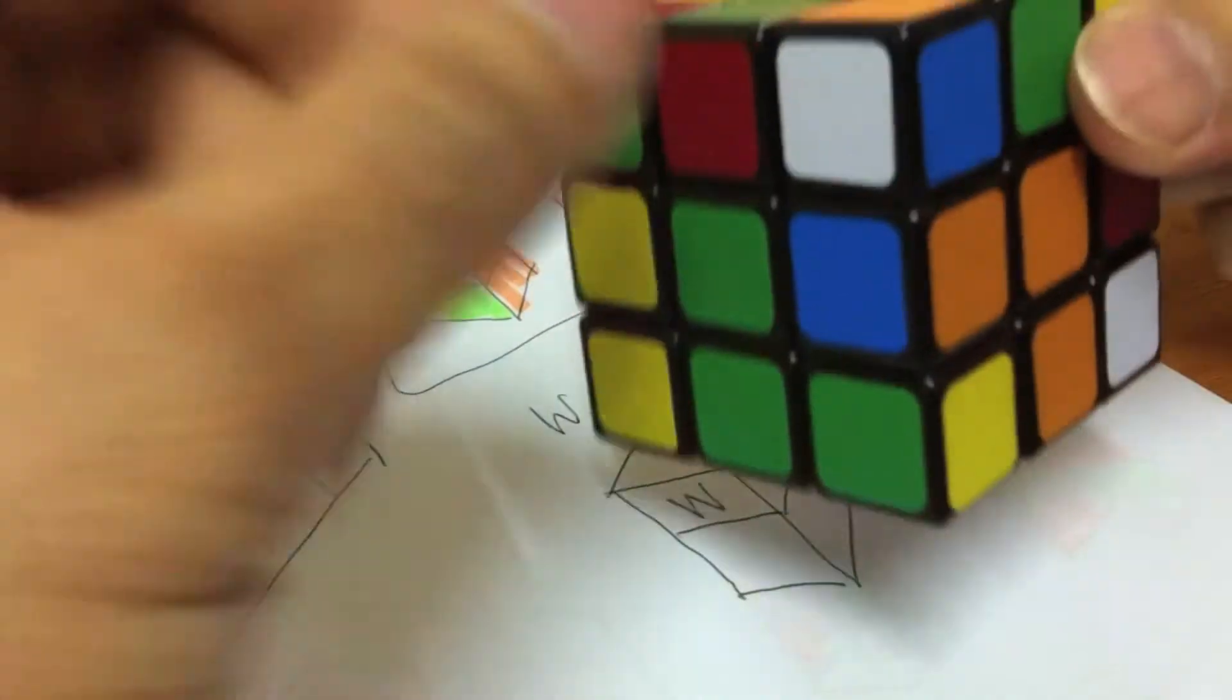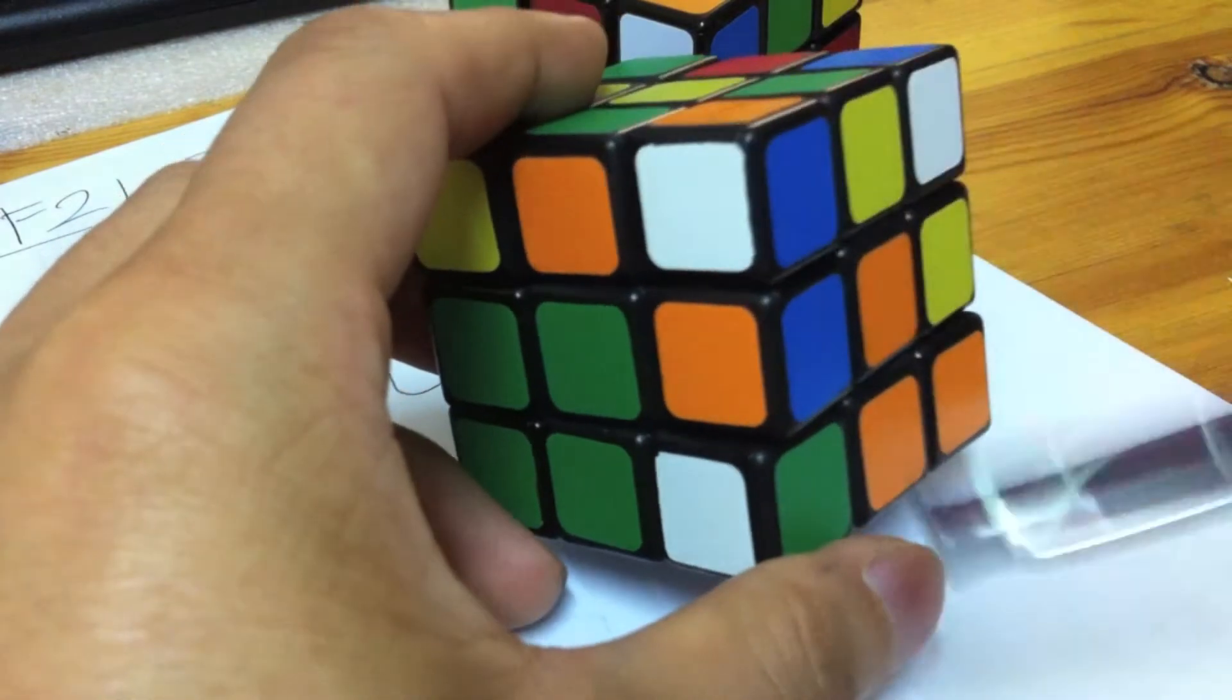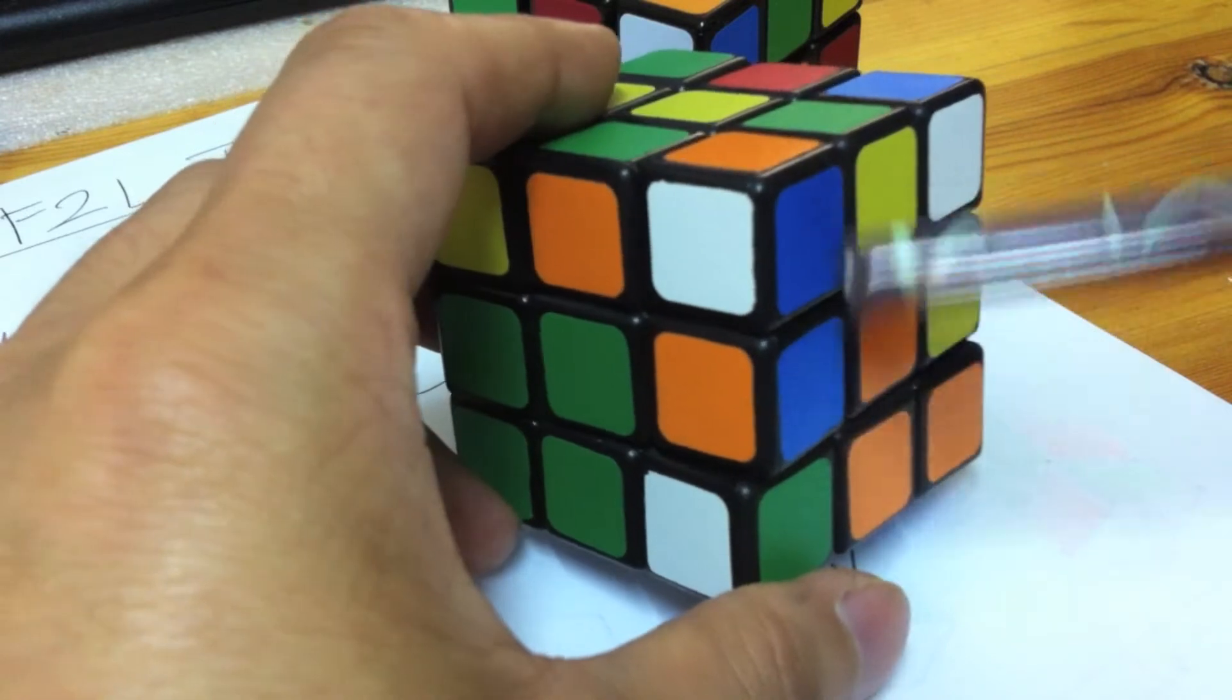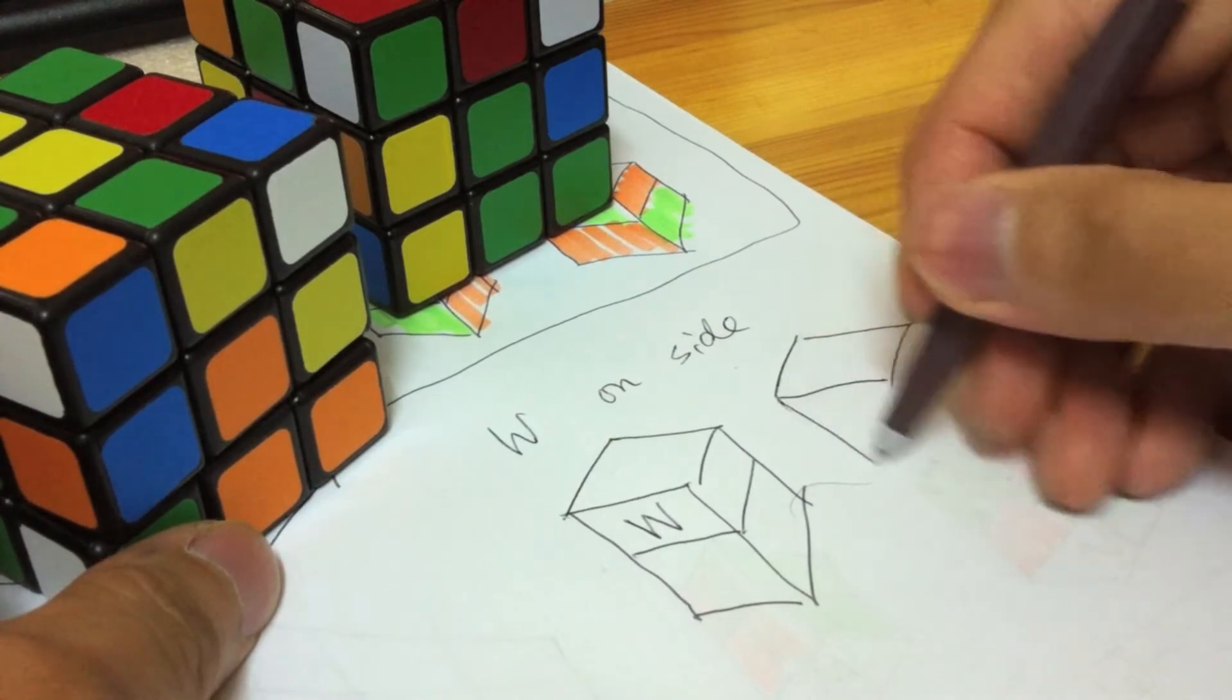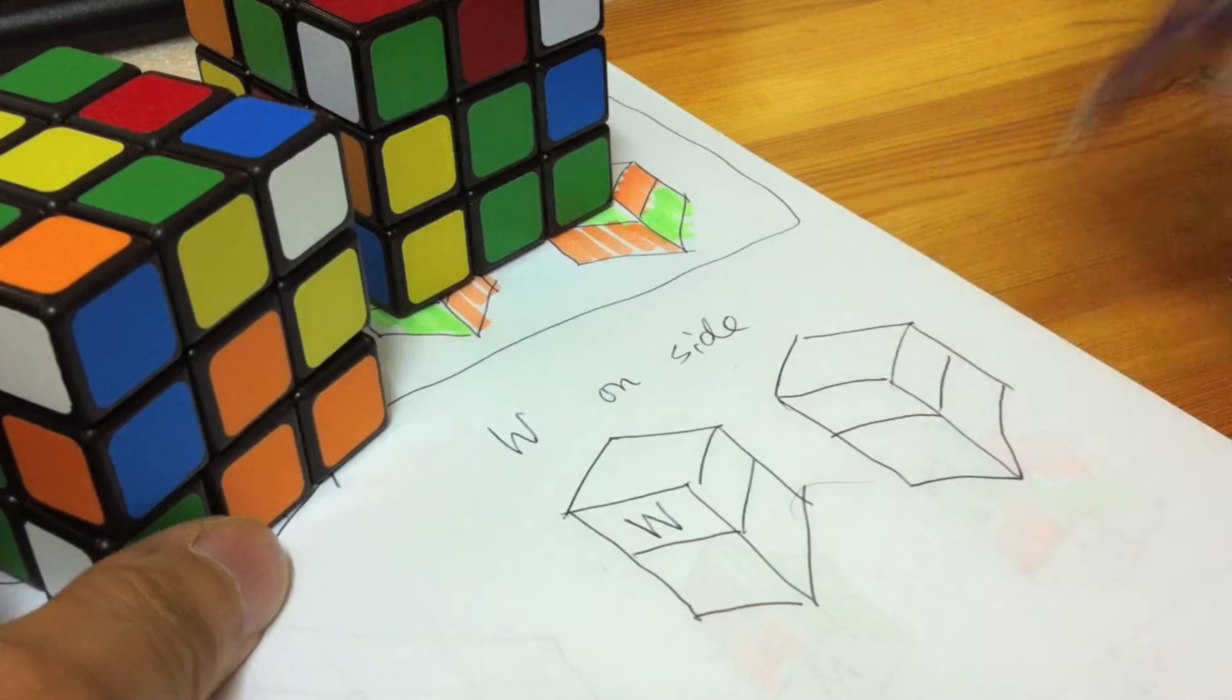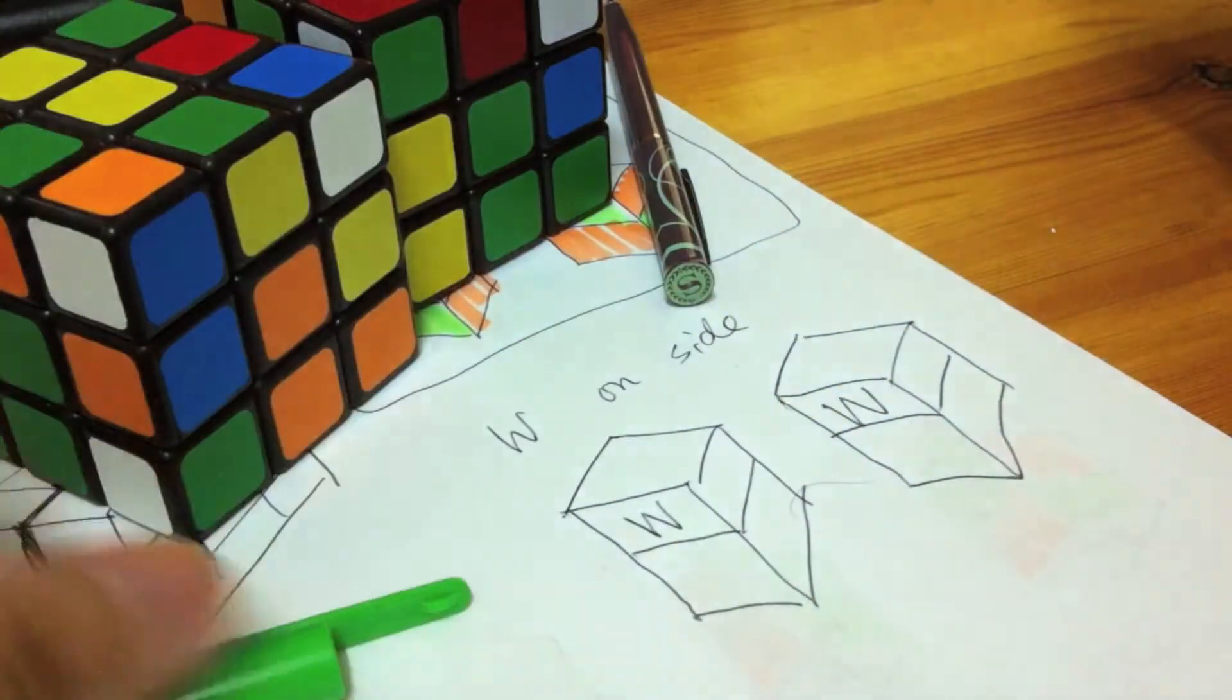There is another white on the side example like that. The white is on the side and the blue and orange colors are arranged like that. So in my drawing, I should add in another blue and orange colors. Another magnified example: white on the side. If I fill in the colors, it's like that.